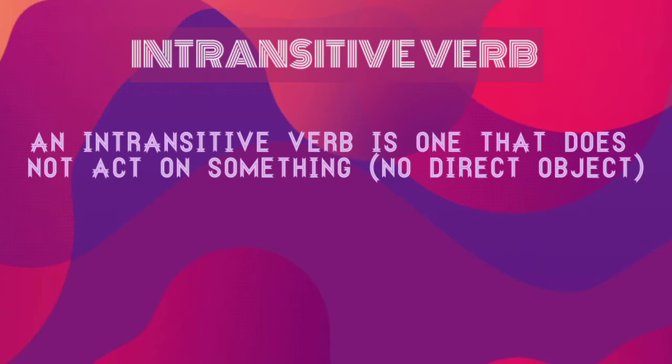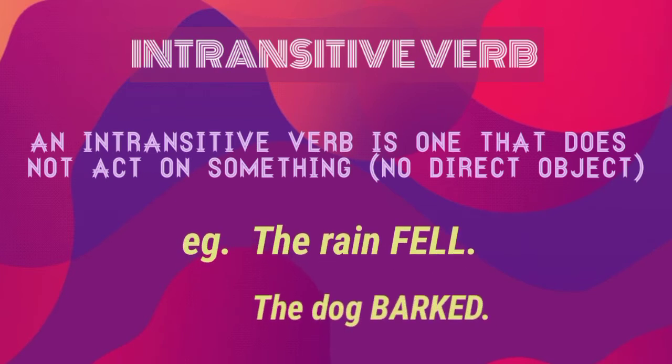Intransitive verb. An intransitive verb is one that does not act on something — that is, it has no direct object. Intransitive verbs wo hoote hai, jo kisi cheez pe directly act nahin karte. Un mein koi direct object nahin hoota. For example, the rain fell — fell is an intransitive verb and there is no direct object. The dog barked — barked is an intransitive verb and there is no direct object here also.